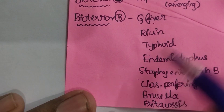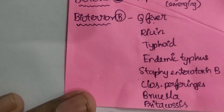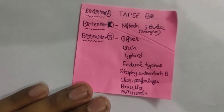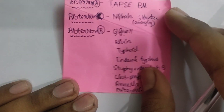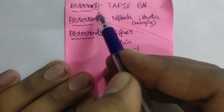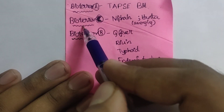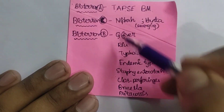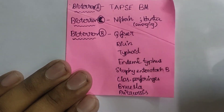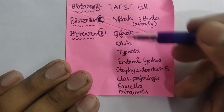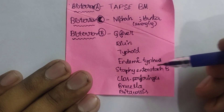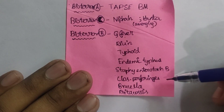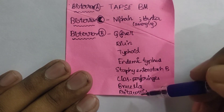Category B agents include Q fever, Ricin, Typhoid, Endemic typhus, Staphylococcal enterotoxin B, Clostridium perfringens, Brucella, Coccidiomycosis, Cryptosporidium parvum, and others. It is difficult to remember all these names, but simply remember the most important ones. To summarize: Category A — TOP CBM mnemonic; Category C — Nipah and Hantavirus; Category B — Q fever, Ricin, Typhoid, Endemic typhus, Staph enterotoxin B, Clostridium perfringens, Brucella, Coccidiomycosis.